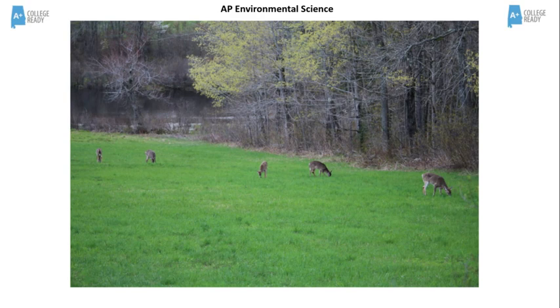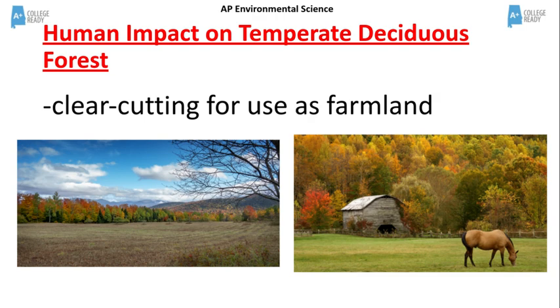The main human impact on the temperate deciduous forest is the clear cutting of trees in order to use the land for agricultural purposes since the soil is so fertile.